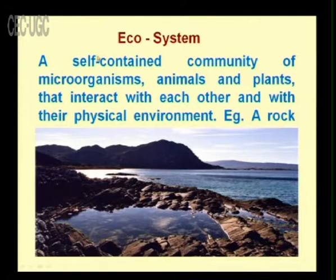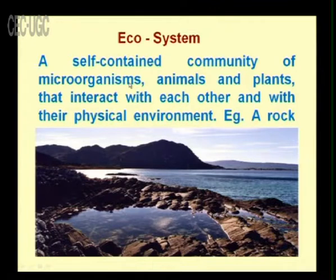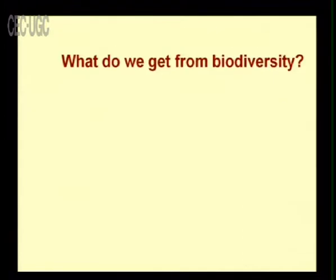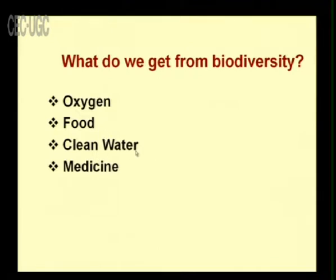An ecosystem is a self-contained community of microorganisms, animals and plants that interact with each other and with their physical environment — for example, a rock ecosystem, which contains microorganisms, animals and plants and is self-sustaining. The third condition for biodiversity is that it should have a variety of ecosystems. From biodiversity we get oxygen, food, clean water, medicine, and aesthetic value, as well as ideas.